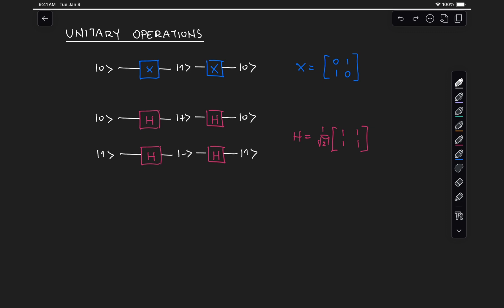A unitary operation is described by a matrix U that has the following property: when we multiply U with its conjugate transpose, that gives us the identity. Another way to represent this is by saying that the inverse of our matrix U is equal to its conjugate transpose.